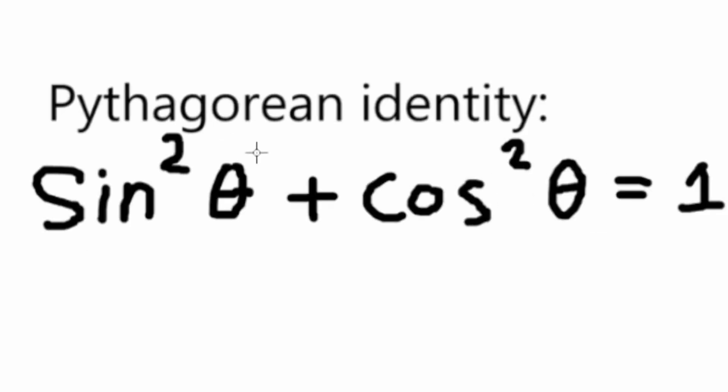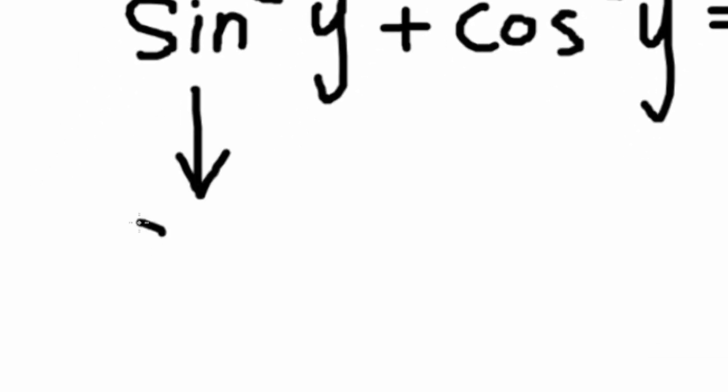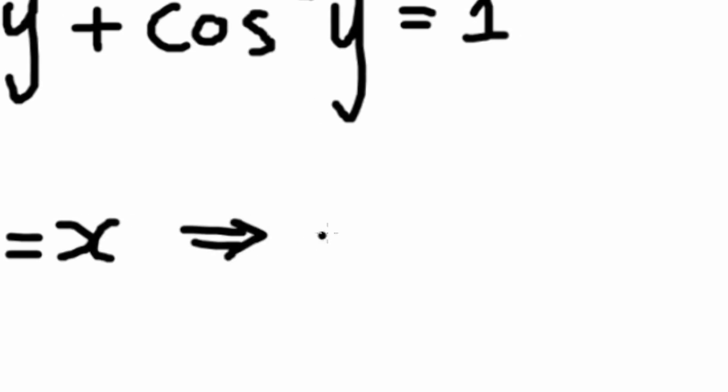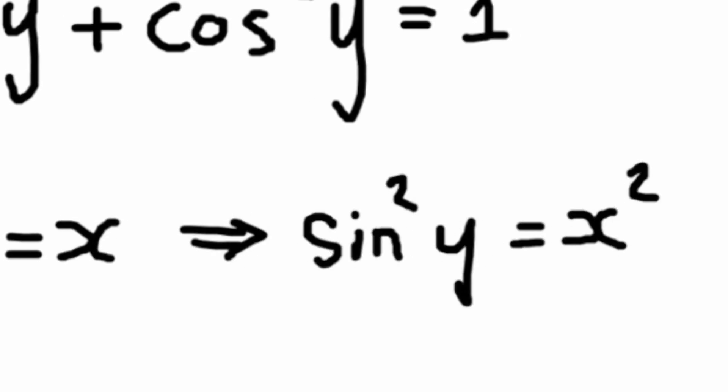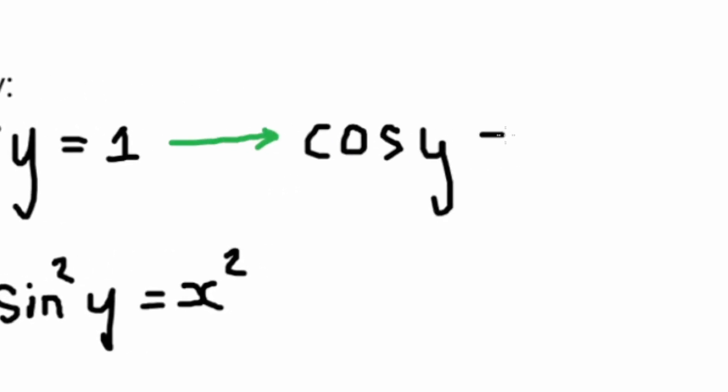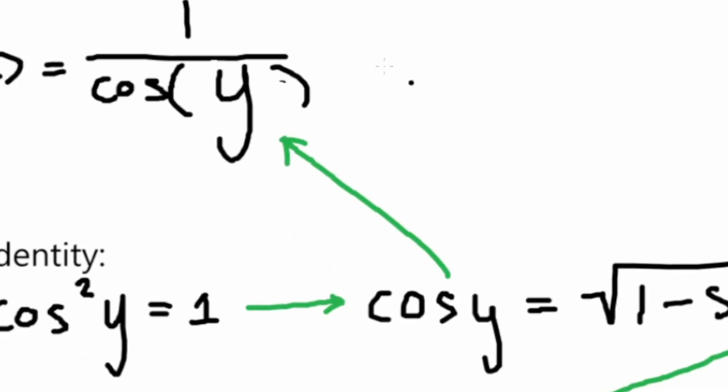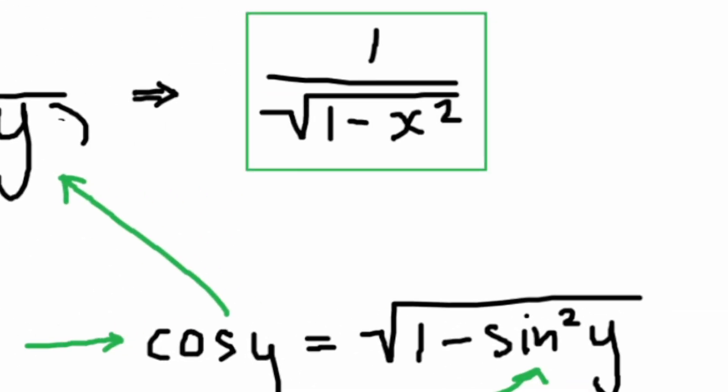Notice how sine to the power of 2, y, is very similar to sine y where that equals x. Well, we can actually just square the x to make that equal and substitute that in for this part of the denominator. We're actually done. We're finished. Because, you know what, we have the derivative right here. That's it. That's pretty cool.